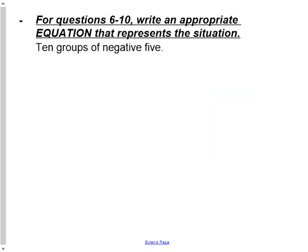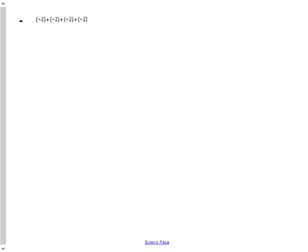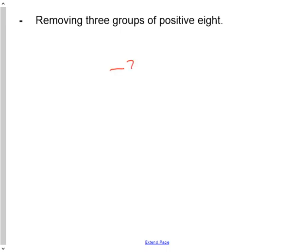Question 6: write an appropriate equation that represents the situation. Ten groups of negative 5 — since it says equation, I need to put an equal sign — equals negative 50. Question 7: negative 2 plus negative 2 plus negative 2 plus negative 2, or 4 groups of negative 2, will equal negative 8. Question 8: removing 3 groups of positive 8 will equal negative 24 as your equation.